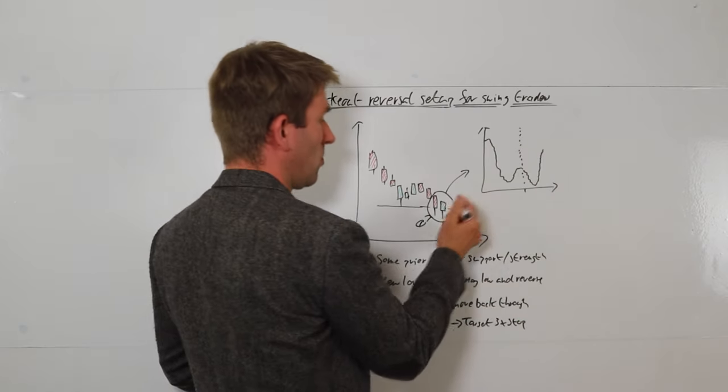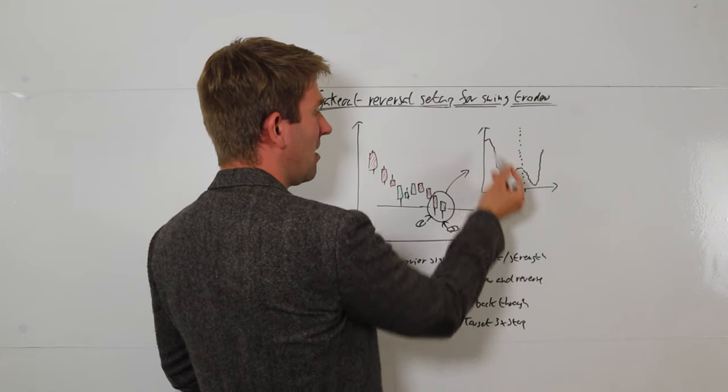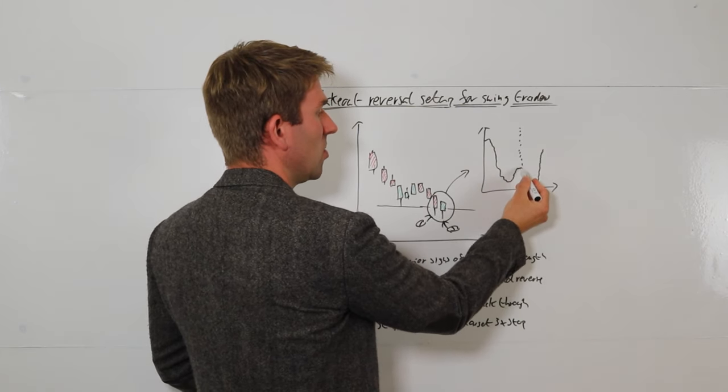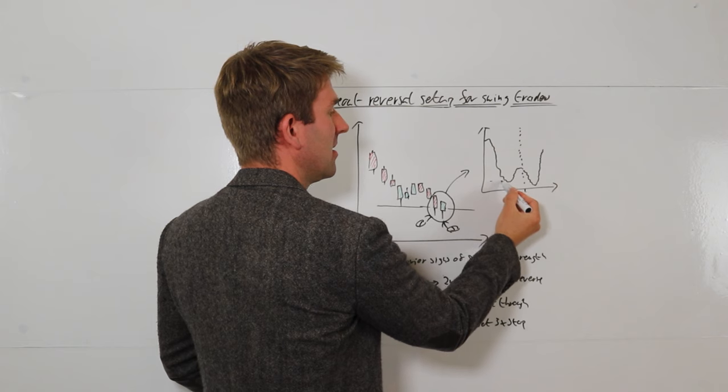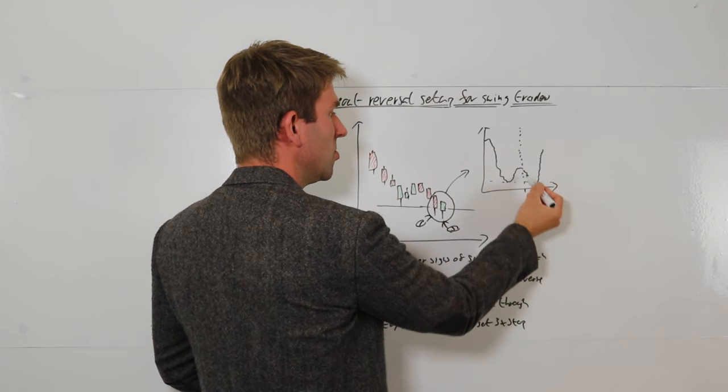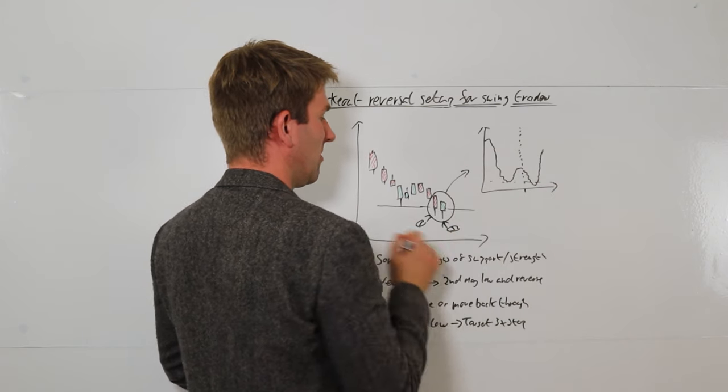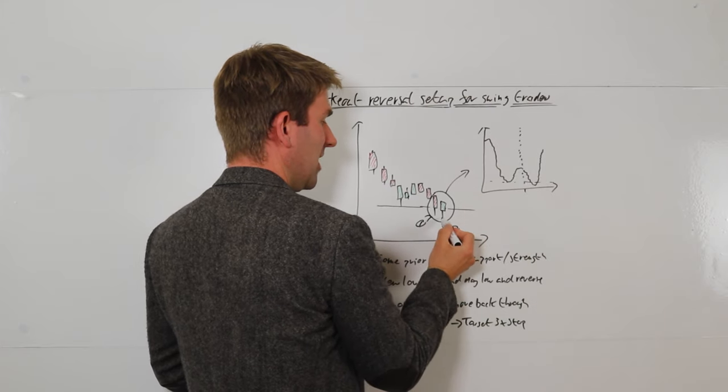So day two, the second day low is a break of the previous day's low and then a reverse. Now's a good time to look at the intraday chart. That's approximately what these candles would look like. Started at highs, went to lows, closed here. So we had a low put in here and this is the low we're drawing.